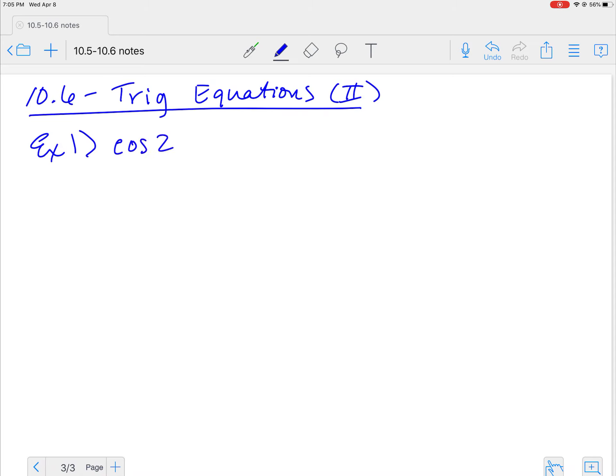Alright, now we're looking at 10.6. We're still doing trig equations, but these trig equations are dealing more with double angles. We're going to be looking at our double angle equations and identities. We have cos(2x) = cos(x), and these are going to be between 0 to 2π again.